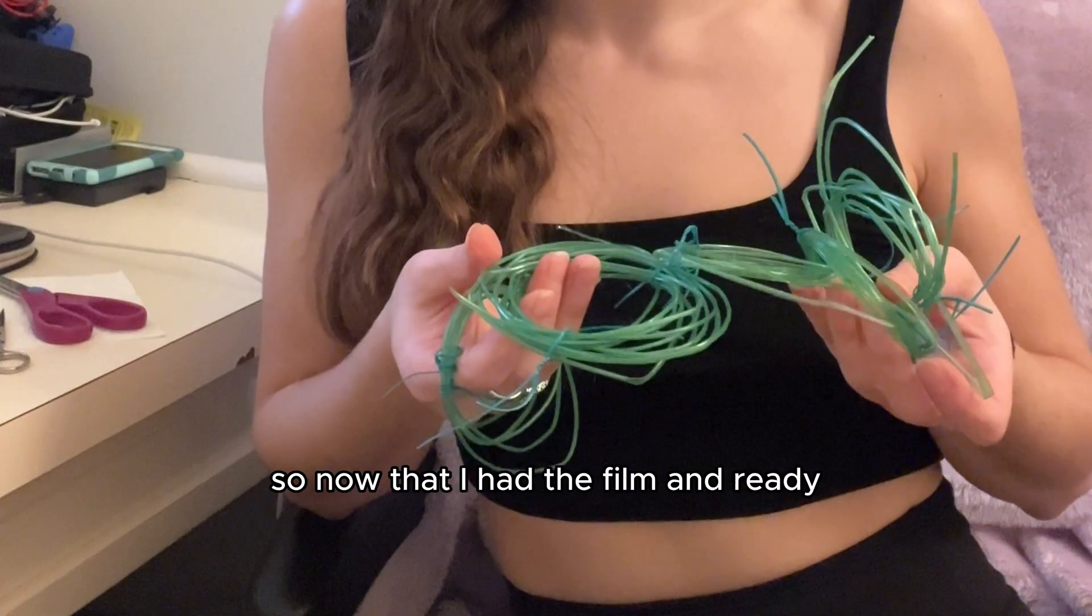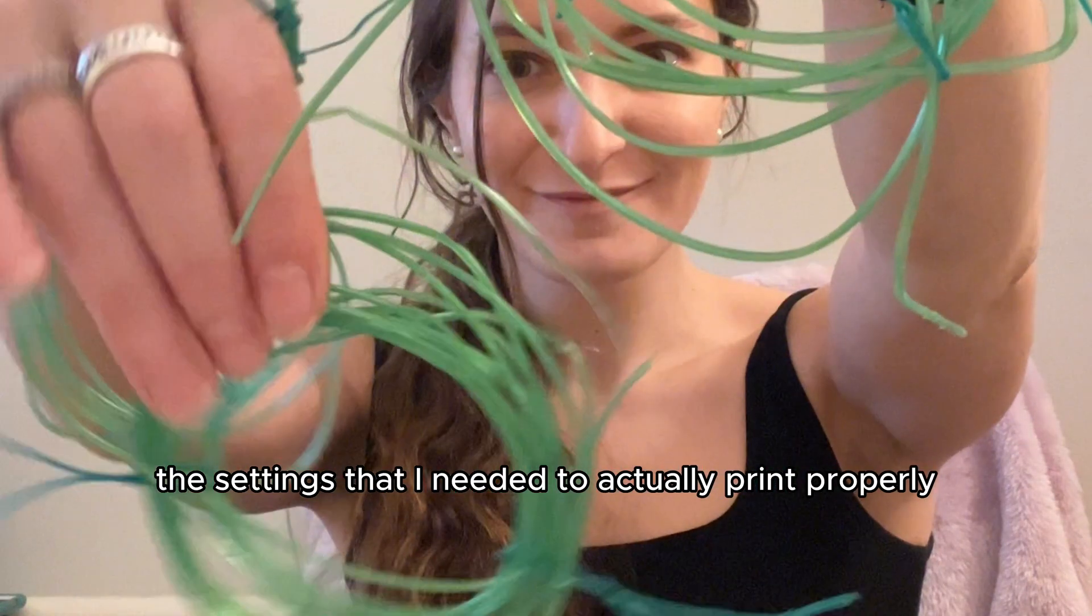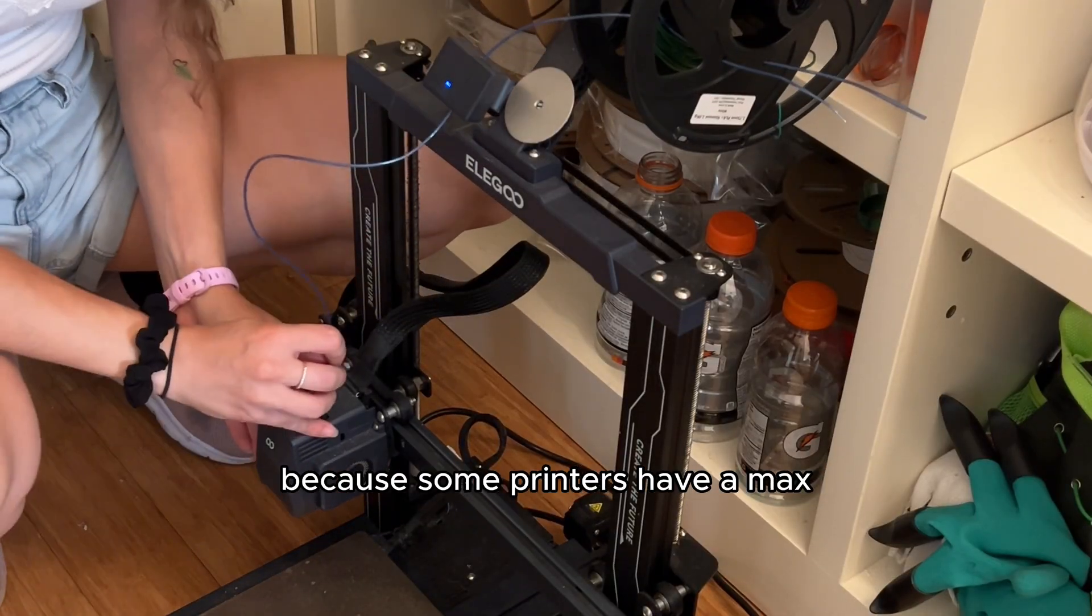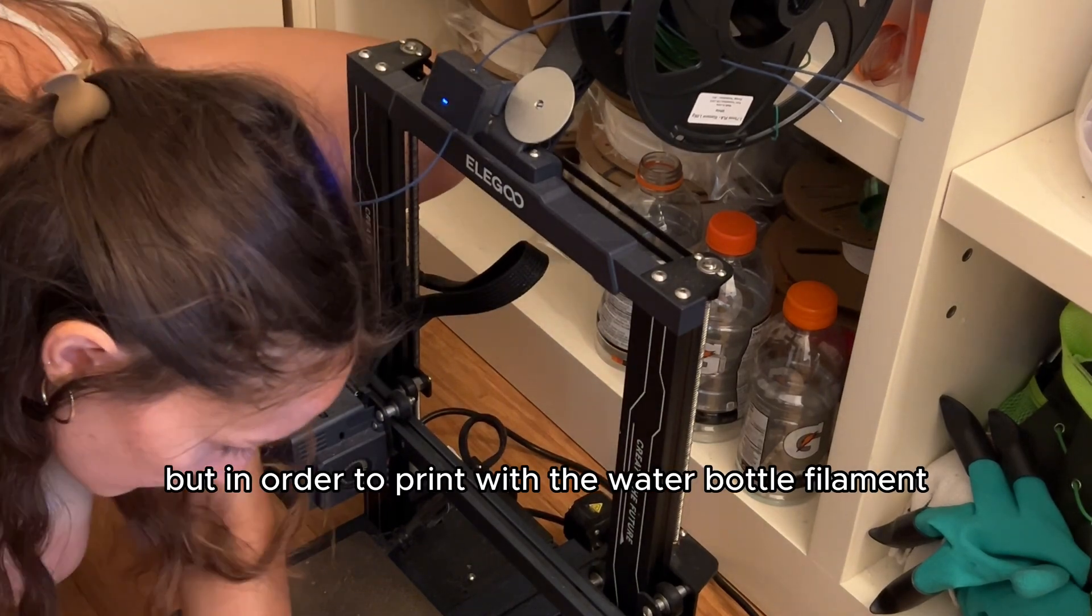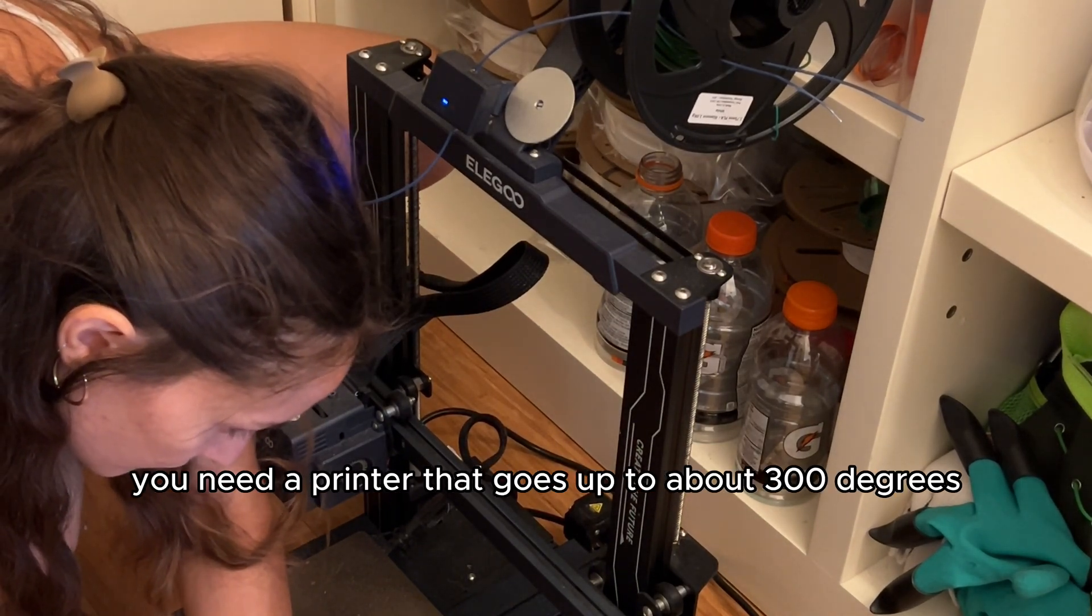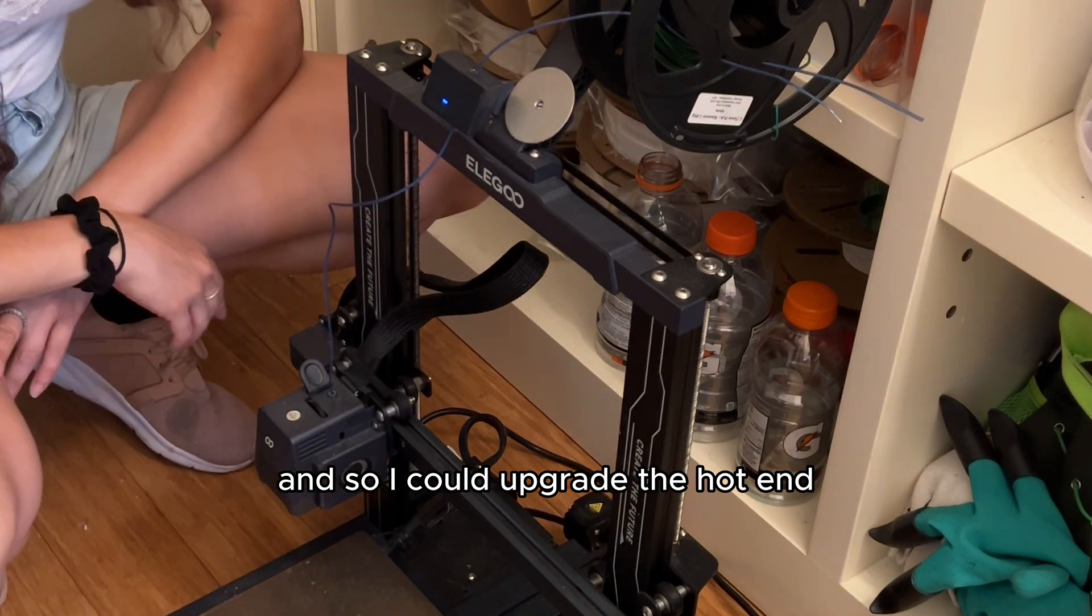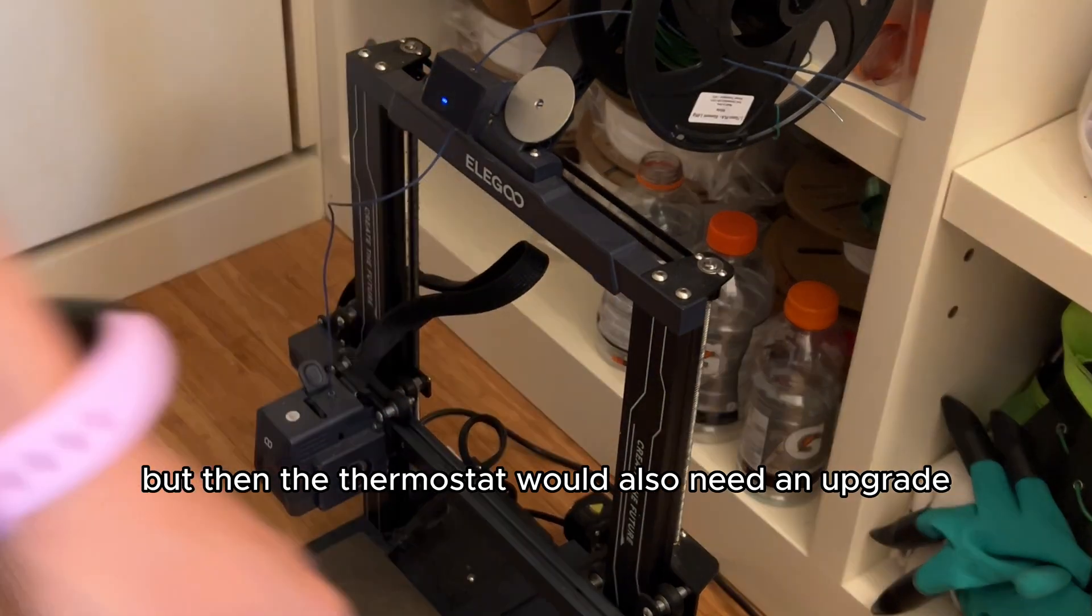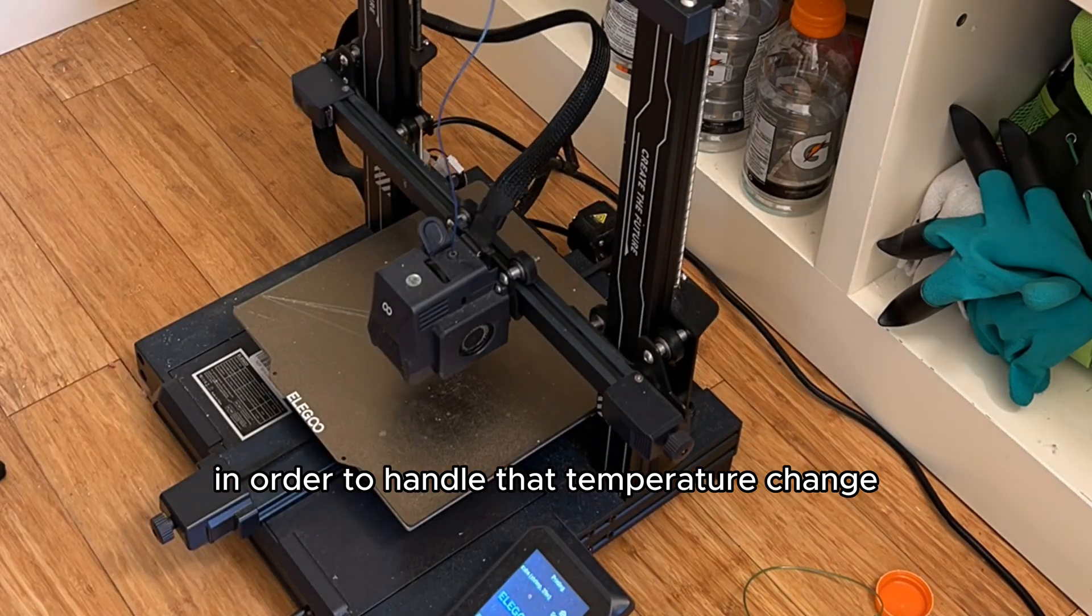Now that I had the filament ready it was time to figure out the settings that I needed to actually print properly, and this is currently the hardest part. Some printers have a max temperature setting of 250 to 275 like mine, but in order to print with the water bottle filament you need a printer that goes up to about 300 degrees. I could upgrade the hot end but then the thermostat would also need an upgrade and therein so would the motherboard in order to handle that temperature change.